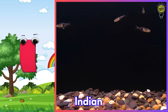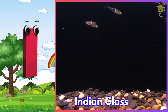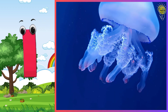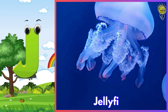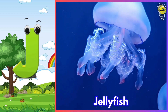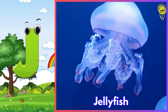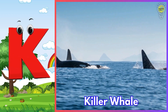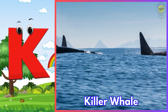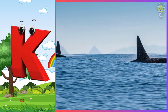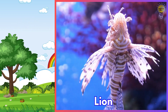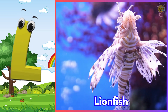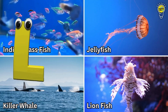I is for Indian glass fish. J is for jellyfish. K is for killer whale. L is for lionfish.